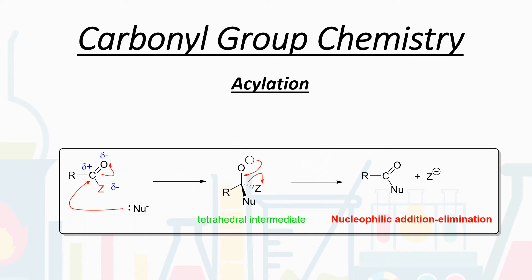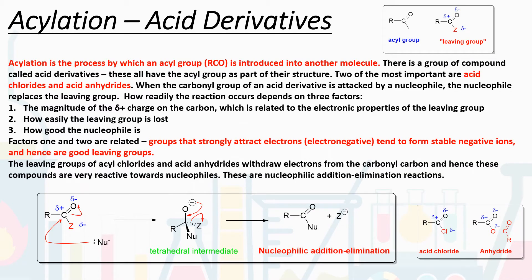Hi everyone, today another video in the carbon R group series looking at acylation. Acylation is the process by which an acyl group is introduced into another molecule. The acyl group we denote as RCO — we have our carbon R group, our C double bond O, but also attached to that we have a carbon-based group, an R group.